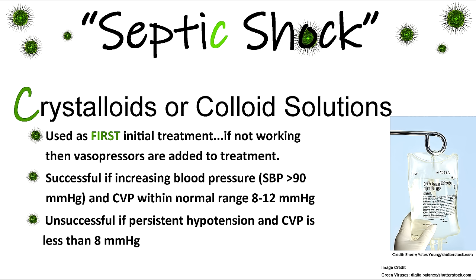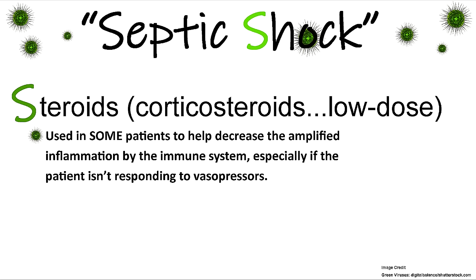By giving fluids, we replace the fluid that has left the vessel and increase venous return to the heart. As blood flows back into the right side, CVP should rise into normal range — a normal CVP is 8 to 12 mmHg. If fluids are unsuccessful, you would see persistent hypotension that isn't improving, and a CVP less than 8 mmHg, indicating insufficient filling pressure because the circulatory system is still depleted.